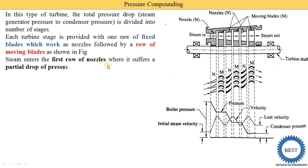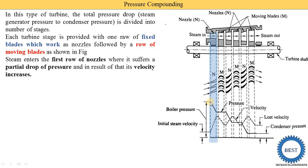Steam enters the first row of nozzles where it suffers a partial drop of pressure, and as a result its velocity is increased. In the nozzle, pressure is reduced and velocity is increased. This is a partial pressure drop — not a direct reduction from boiler pressure to condenser pressure — that's why we call it a partial drop. In the nozzle, the steam velocity increases from the initial steam velocity at that point.